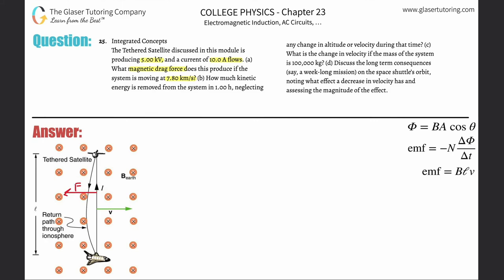As soon as you reframe it, you realize this is a concept from the prior chapter. The force is equal to ILB sinθ, where θ is the angle between the current and the external field — that's 90 degrees, so sine of 90 is just one. The strength of the external field is the Earth's field, which from the prior problem is 5×10⁻⁵ tesla.